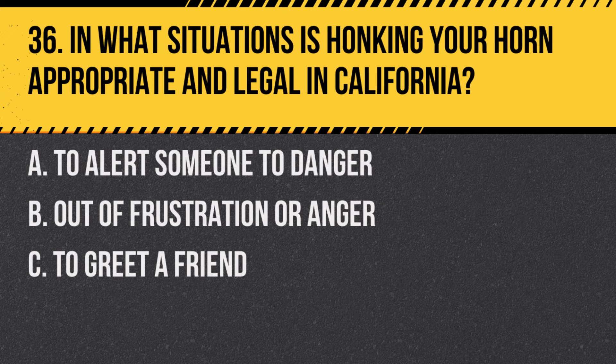Question 36: In what situations is honking your horn appropriate and legal in California? A. To alert someone to danger. B. Out of frustration or anger. C. To greet a friend. Answer: A. To alert someone to danger. Honking your horn is appropriate and legal in California to alert someone to danger.